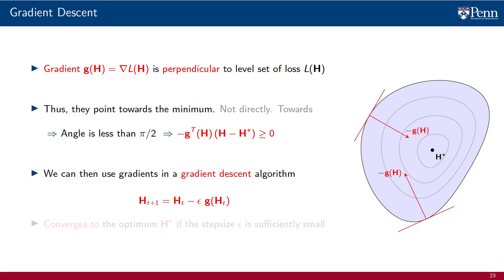If the gradient points towards the minimum, we can use it in a gradient descent algorithm. We have an iteration index t and an associated parameter value h_t. We evaluate the gradient g of h_t associated with this parameter and scale it with a step size epsilon. We then update the parameter value to h_{t+1} by subtracting the scaled gradient from the current parameter value h_t.